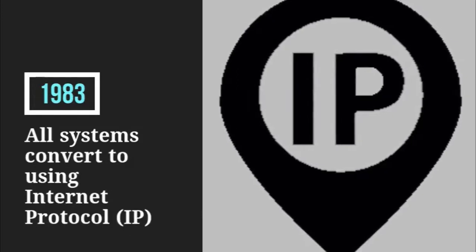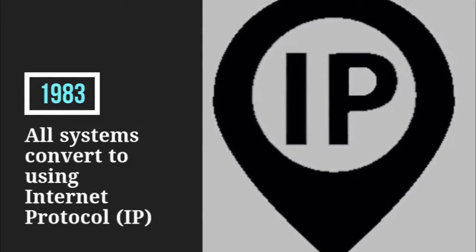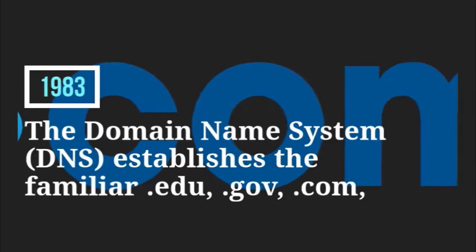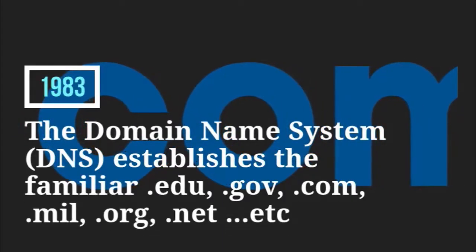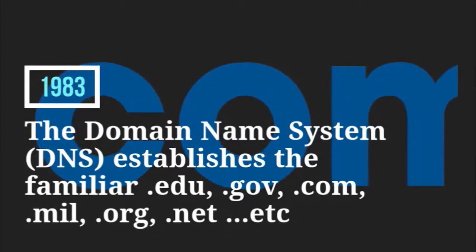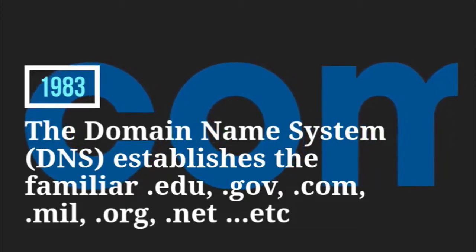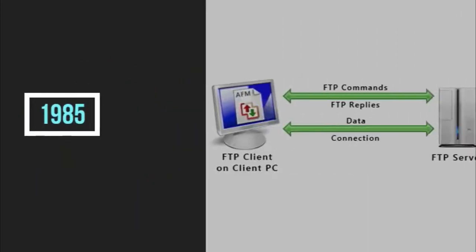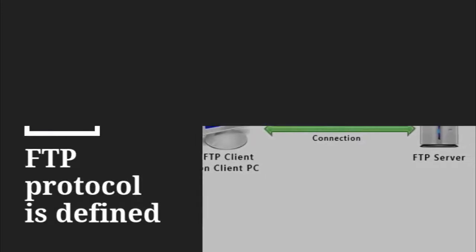In 1983, all systems convert to use internet protocol. Also in 1983, the domain name system establishes the familiar .edu, .gov, .com, .mil, .org, .net, etc. In 1985, FTP protocol is defined.